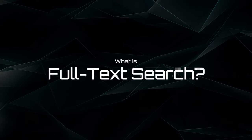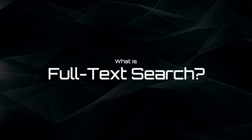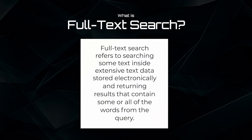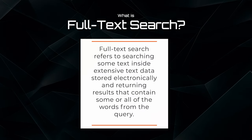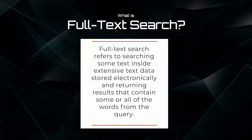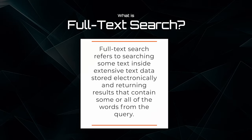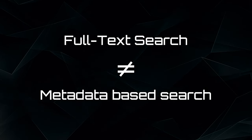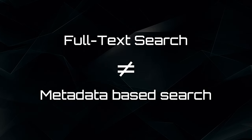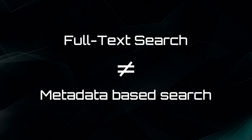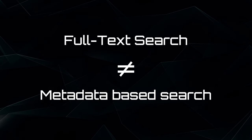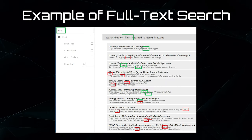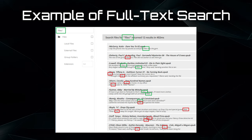To begin, I want to give you a brief on what full text search is. Full text search refers to searching some text inside of extensive text data that's stored electronically and returning results that contain some or all of the words from the search query. Full text search is different from searches based on metadata or on pieces of the original text, like titles, regions, et cetera, since the full text search engine is examining all of the words in every single stored document.